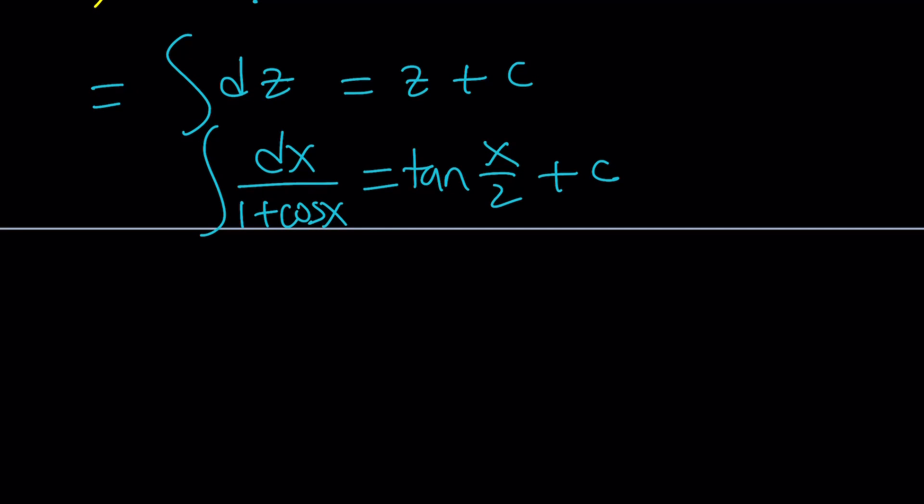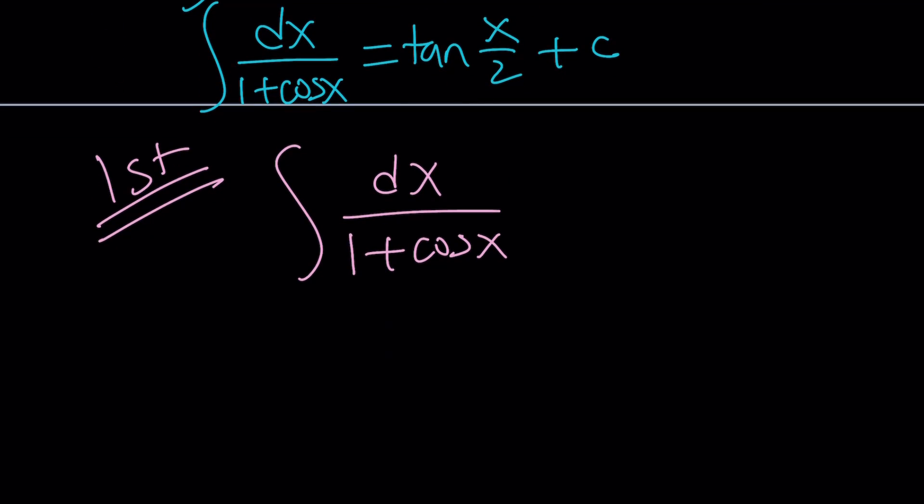And this brings us to the first method. Because remember, we did the second method first. So now we're going to do the first method second. Does that make it the second method? No. The first method is still the first method. So with the first method, to be able to integrate 1 over 1 plus cosine, I'm going to use double angle formulas, because why not? Well there's a good reason behind it.